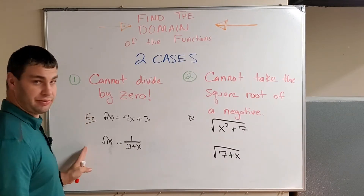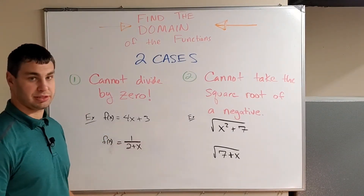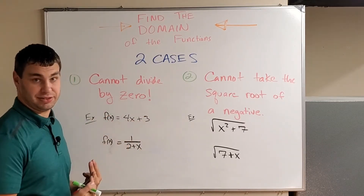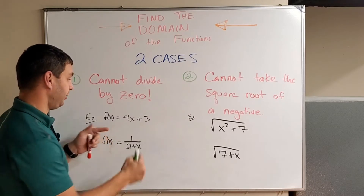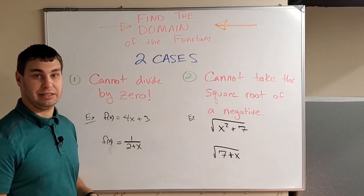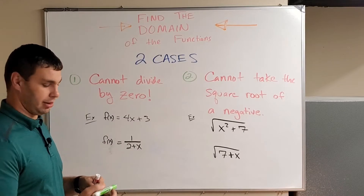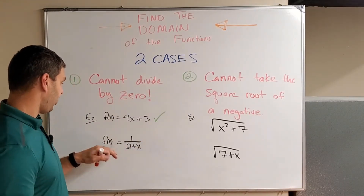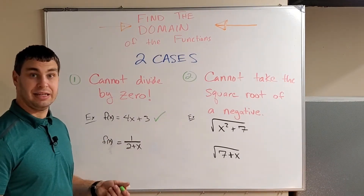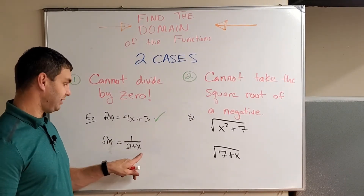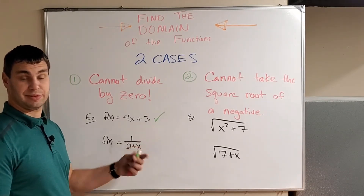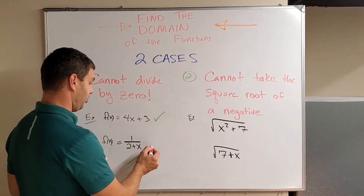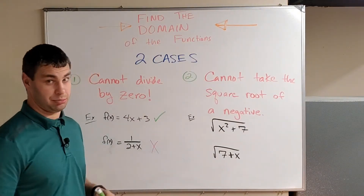I have a couple of different examples up here. The first one says f(x) = 4x + 3. Is there any time where this is going to be divided by zero? No, there's not. No matter what I plug in for x, it's never going to be a problem. So every single part of the domain will work there. However, in the bottom one, 1 over (2 + x), that's going to be divided by zero when x equals negative 2, right? 2 plus negative 2 is zero, so I get 1 over zero. So this one will not work for all of our x's that we input.